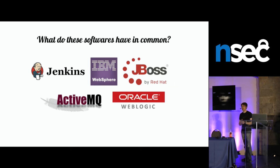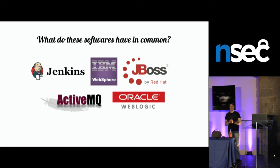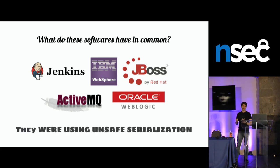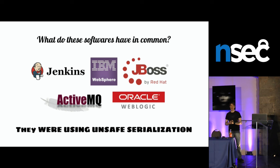Getting into the subject: what do all these applications have in common? Late last year, all those applications were vulnerable to the same vulnerability class. It's the same pattern — not exactly the same exploitation, but really the same vulnerability class. All those are Java applications, but I'll try to highlight the design principle and design problem related to this flaw that also applies to other languages and libraries.